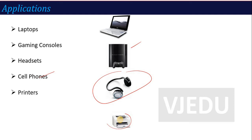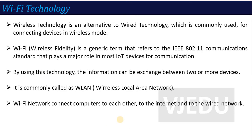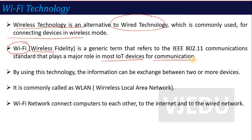Now we move to the second wireless technology — Wi-Fi. Wireless technology is an alternative to wired technology commonly used for connecting devices in wireless mode. Wi-Fi stands for Wireless Fidelity. It is a generic term referring to the IEEE 802.11 communication standard, which plays a major role in most IoT devices for communication. The Wi-Fi module based on IEEE 802.11 standard is mostly required in IoT devices — in fact, almost every IoT device today uses a Wi-Fi module rather than Bluetooth.